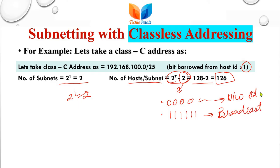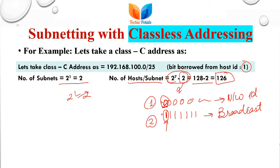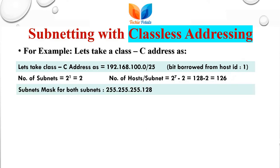As we are using one bit from the host as the network ID, one bit as 0 represents the first subnet and one bit as 1 represents the second subnet. These bits represent the network ID for two subnets. The subnet mask for both subnets will be 255.255.255.128, because we are using one bit from the host ID — that one bit becomes 1 and the rest of the host bits are 0, forming 128.